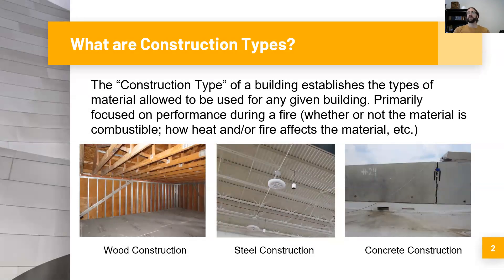So, construction types — what are they? The construction type of a building establishes the types of material allowed to be used for any given building. This is primarily focused on performance during a fire, whether or not the material is combustible, how heat and/or fire affects the material. It also includes things like fireproofing, whether or not these building elements are required to be fireproofed or are not required to be fireproofed.